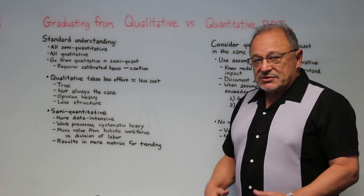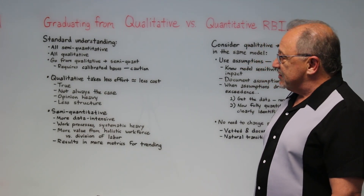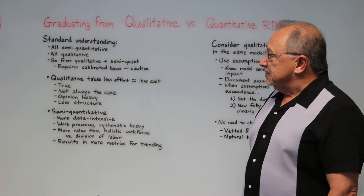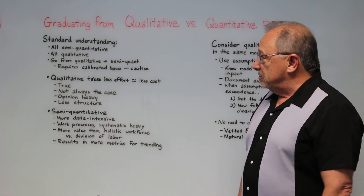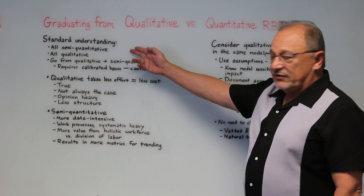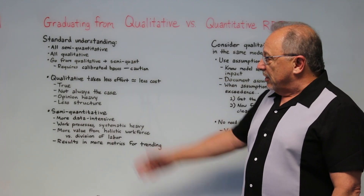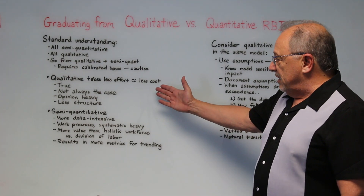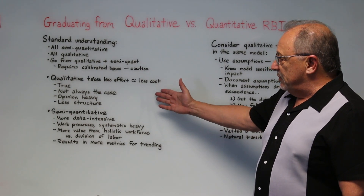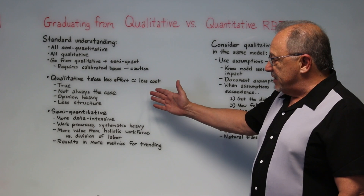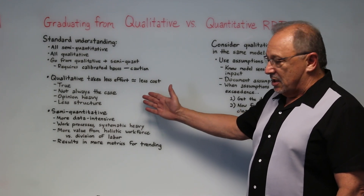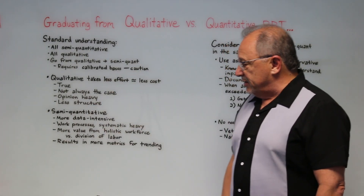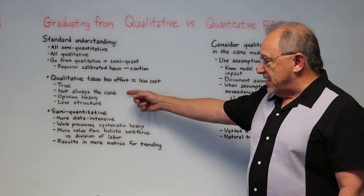Let's start out by forming a basis and a context. Our standard understanding of RBI, as far as approaches go, is there are semi-quantitative approaches and there are qualitative approaches. The standard view is that qualitative takes less effort, less cost, less time — and while notionally this is true and often is, sometimes it's not the case.